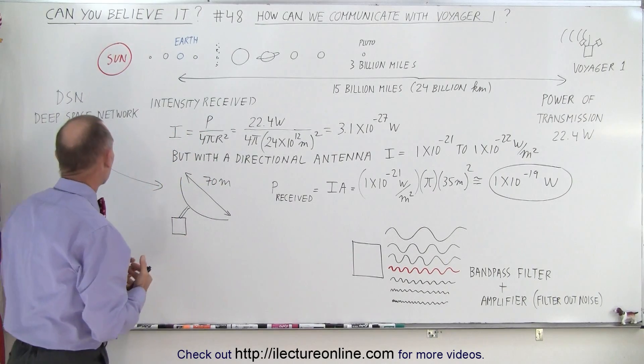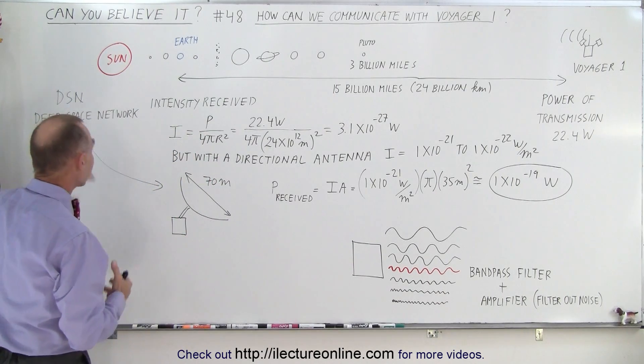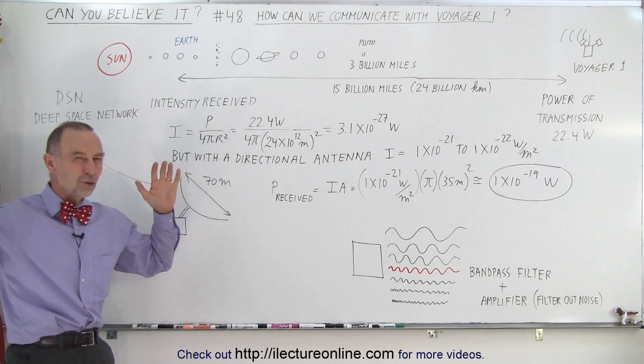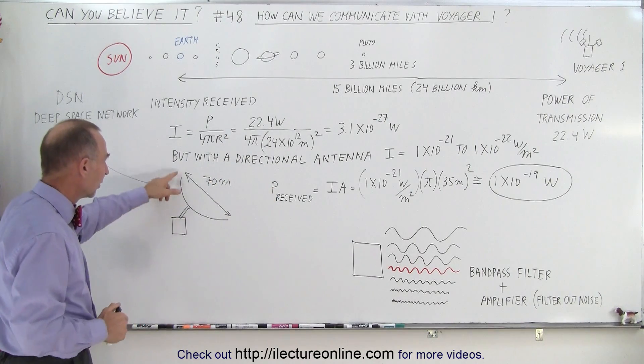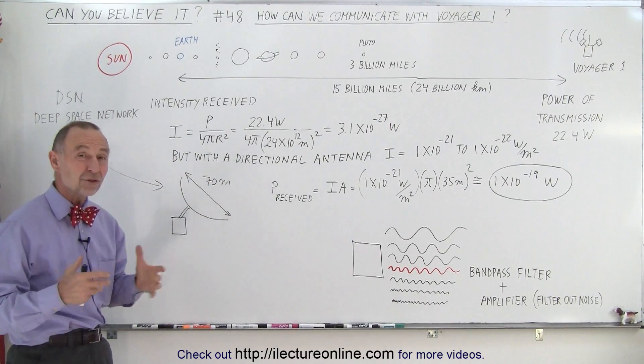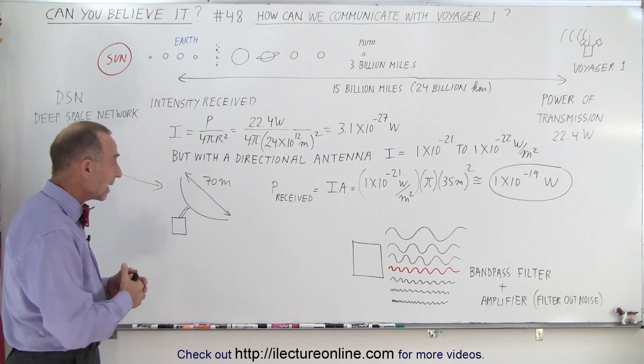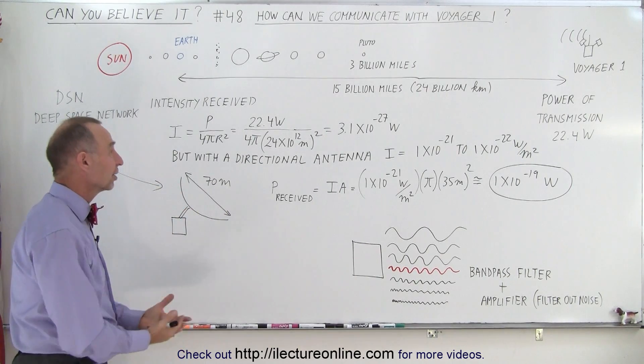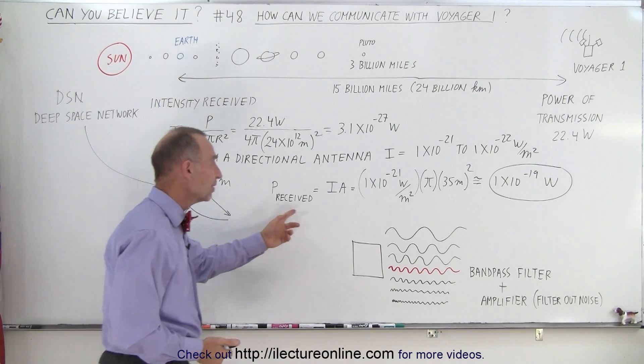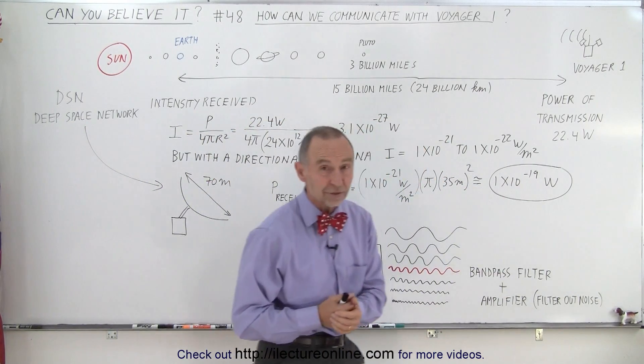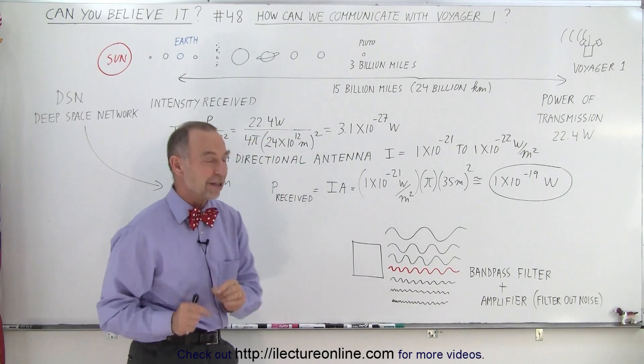So in order to make sense out of the signal, we use what we call the DSN, the Deep Space Network, which has these enormous radio antennas, one that's as much as 70 meters across. That's almost the size of a football field, and by using this large collection area, we're able to boost the power received to about 1 × 10^-19 watts, which is still extremely faint.